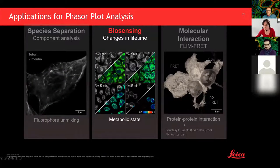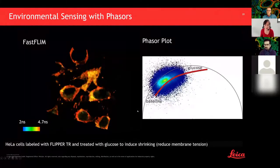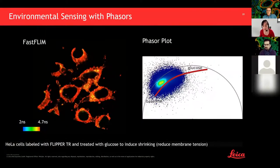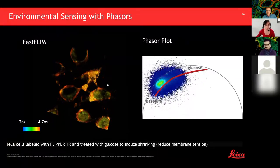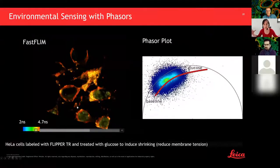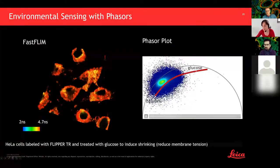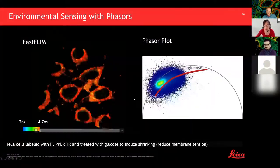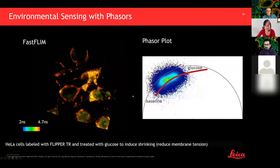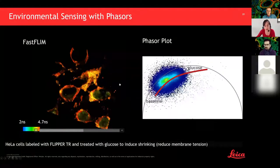Another important FLIM application is biosensing. Many fluorophores change lifetime due to microenvironment — for example metabolic state. Sensors like Flipper-TR change lifetime depending on membrane tension. In this example we mistreated cells with distilled water and then glucose, making them swell and shrink, and in the phasor trace we could see the lifetime going from baseline to slightly longer, then shorter with glucose addition. We'll see more examples on movies of phasors giving a 3D representation of lifetimes.